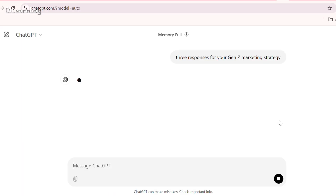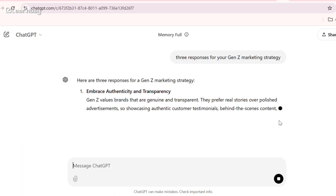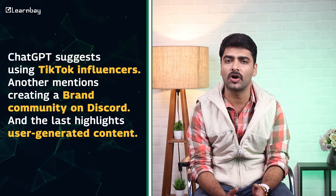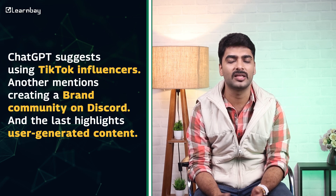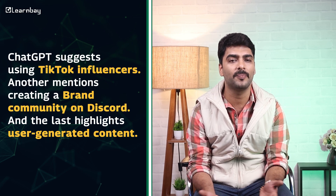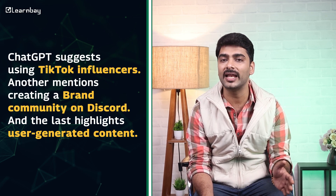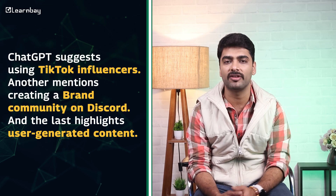Here's an example: you have three responses for your Gen Z marketing strategy. In one, ChatGPT suggests using TikTok influencers. Another mentions creating a brand community on Discord. And the last highlights user-generated content. By combining all three, you get a holistic plan that's more powerful than any single response alone.